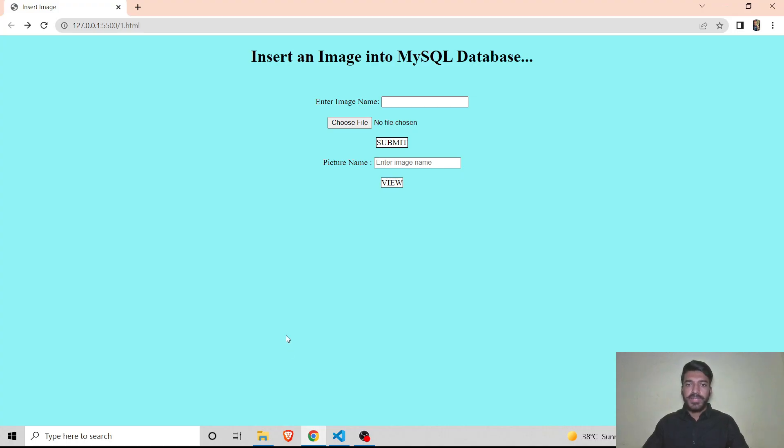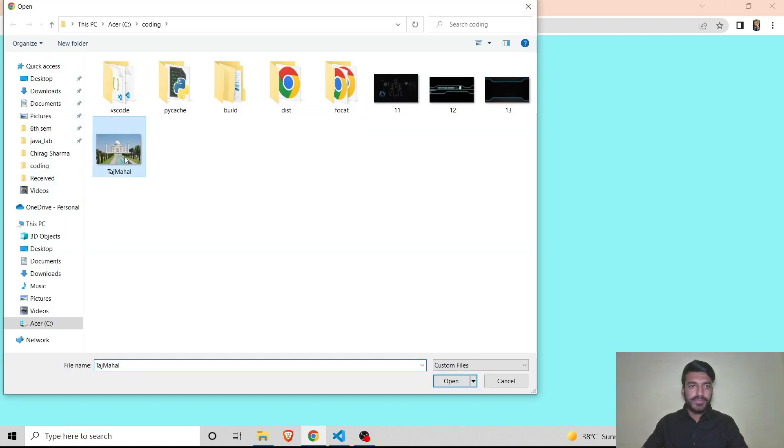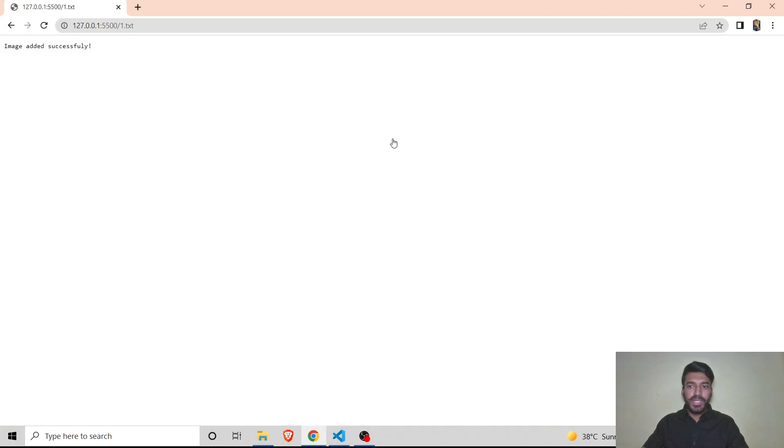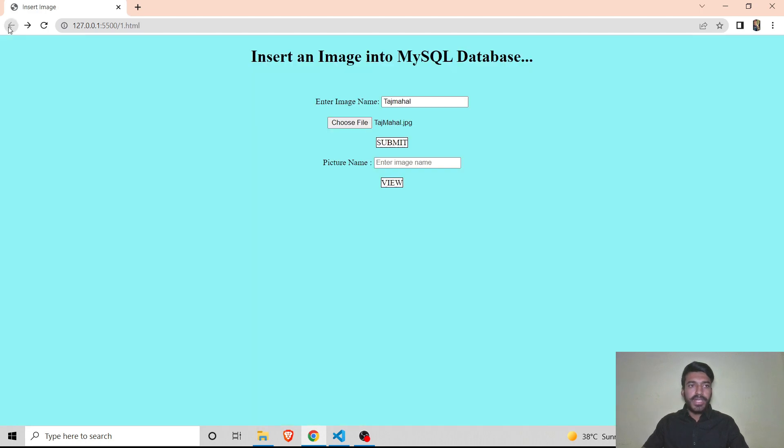This is our web HTML page. In this, I will give a name to the image as TajMahal. Then I will choose a TajMahal photo from the local disk. On clicking the submit button, a message will show that image added successfully. It means that the image is successfully added to the database.